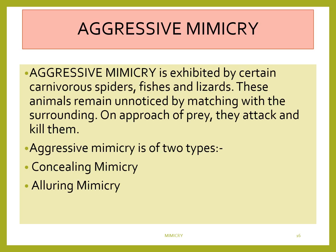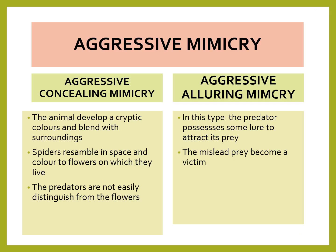The second type of mimicry is aggressive mimicry. Aggressive mimicry is exhibited by certain carnivorous spiders, fishes, and lizards. The animals remain unnoticed by matching with their surroundings. It is of two types: concealing mimicry and alluring mimicry. In concealing mimicry, the animal develops a cryptic color or blends with the surrounding. Normally spiders resemble in shape and color the flowers on which they live, so the predators are not easily distinguished from the flowers.